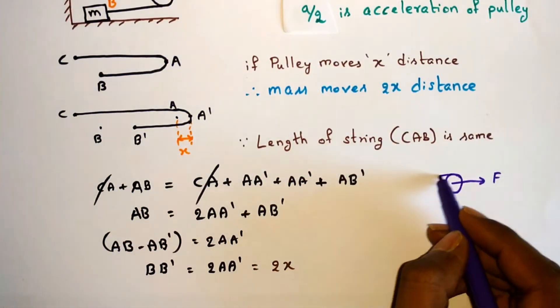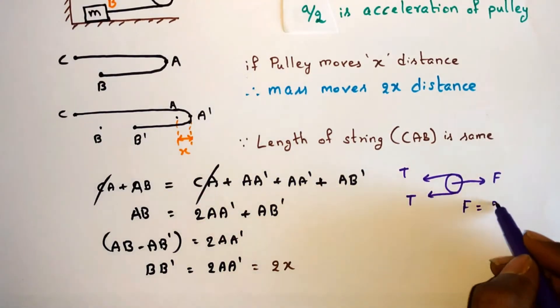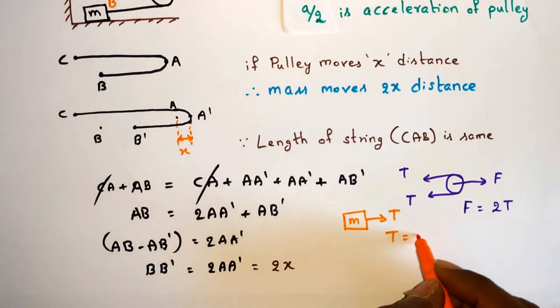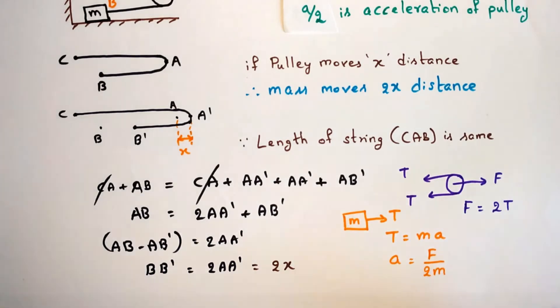Now if we take free body diagram of pulley, we get F = 2T. Since the tension is the force acting on mass, T = ma. From the previous equation, we can write a = F/2m which is acceleration of mass. The acceleration of pulley is half of the acceleration of mass.